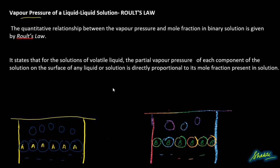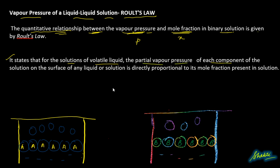Let's talk about vapor pressure of a liquid-liquid solution — that is, Raoult's Law. Raoult's Law gives the quantitative relationship between vapor pressure and mole fraction in a binary solution. It states that for solutions of volatile liquids, the partial vapor pressure of each component of the solution on the surface is directly proportional to its mole fraction present in the solution.